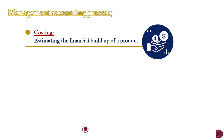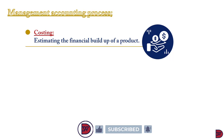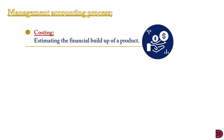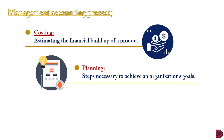Let's take a look at the main processes of management accounting. The first is costing — management accounting identifies the financial components necessary to produce an item, such as material, labor, and overheads. Secondly, we have planning — it thinks of the steps requisite to achieving an organization's aim.